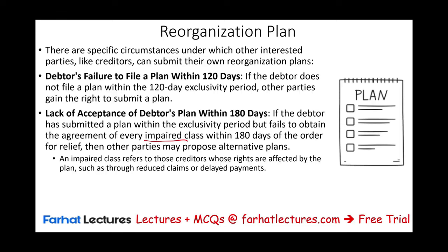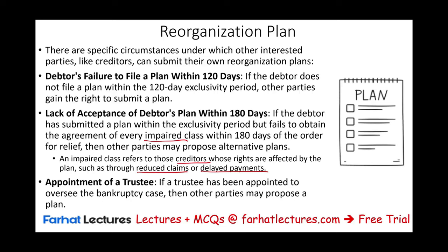An impaired class refers to creditors whose rights are affected by the plan through reduced claims or delayed payment. Under certain circumstances, we might have to appoint a trustee. Remember, there is normally no trustee for Chapter 11, but if a trustee is appointed to oversee the bankruptcy case, other parties may also propose a plan. In normal circumstances, we will not have a trustee.